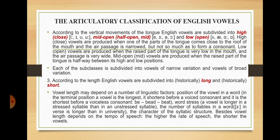According to length, English vowels are subdivided into historically long and historically short. Vowel length may depend on a number of linguistic factors: the position of the vowel in a word — in the terminal position a vowel is longest, it shortens before a voiced consonant, and is shortest before a voiceless consonant (e.g., 'be', 'bead', 'beat'); word stress — a vowel is longer in a stressed syllable than in an unstressed one; the number of syllables in a word — for instance, the vowel in 'verse' is longer than in 'university'; and the character of the syllabic structure. Besides, vowel length depends on the tempo of speech — the higher the rate of speech, the shorter the vowels.